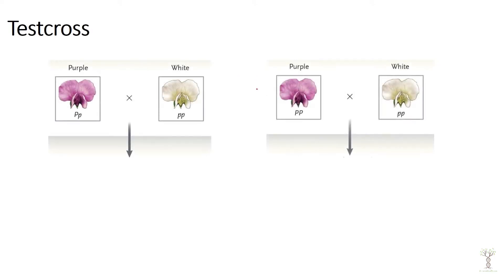For a test cross, let's suppose we have a purple pea plant. Purple pea plants can be homozygous dominant, having two capital P alleles, or a purple pea plant can be a heterozygote with one dominant and one recessive allele. What if you had this purple pea plant and you wanted to figure out its genotype? We can do a test cross.